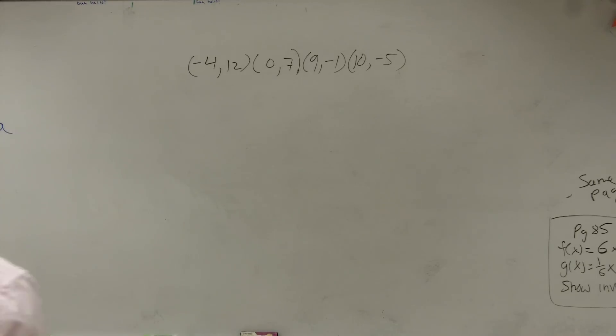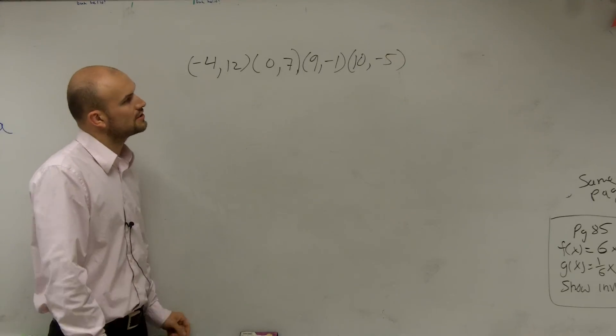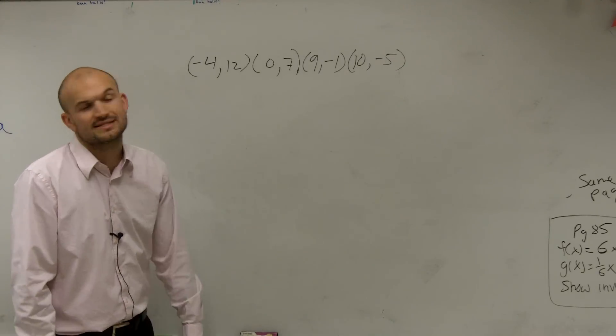OK. So ladies and gentlemen, what we have is a set of points. We have (-4, 12), (0, 7), (9, -1), and (10, -5).